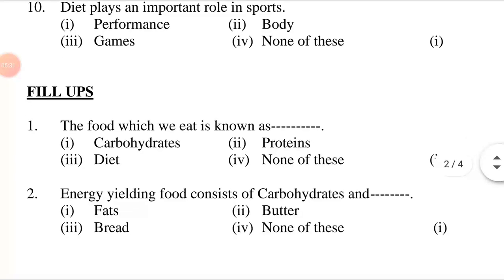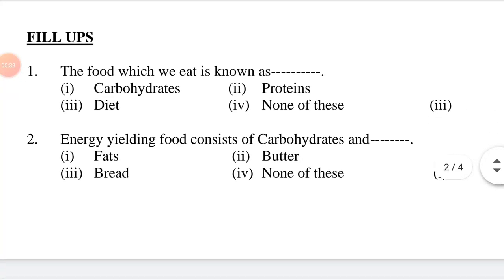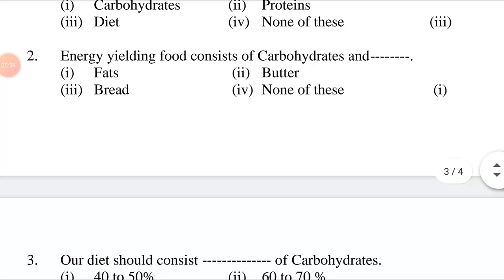Now, fill-ups. Question 1: The food which we eat is known as ___. Options: first, carbohydrates; second, proteins; third, diet; fourth, none of these. Answer is third option: the food which we eat is known as diet. Question 2: Energy yielding food consists of carbohydrates and ___.